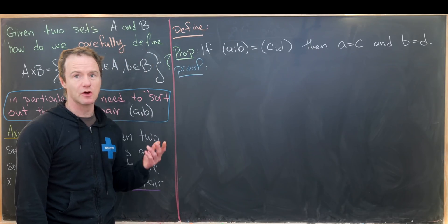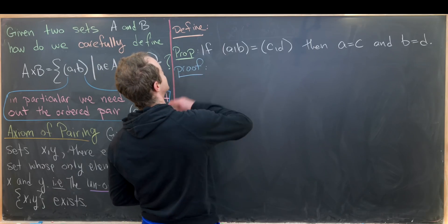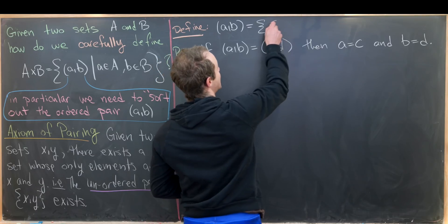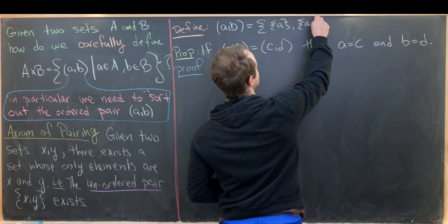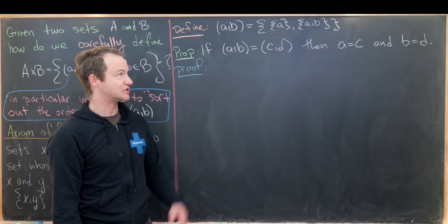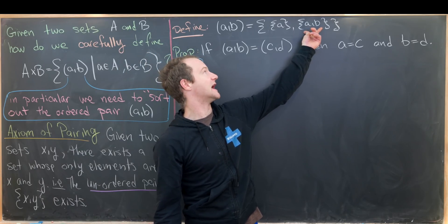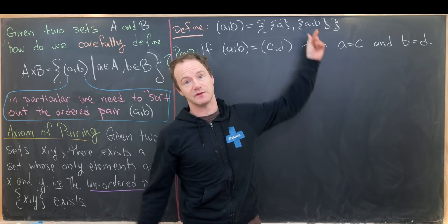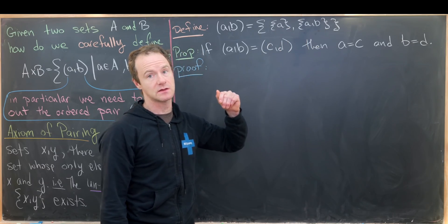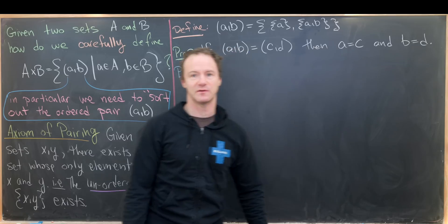Now we want to use the axiom of pairing in order to define an ordered pair. There are several ways to do this; I'm going to go over the one that is most standard. We'll define the ordered pair (a, b) to be the set containing the set {a} and the set {a, b}. We are assured that this object exists: the unordered pair or doubleton {a, b} exists from the axiom of pairing, and then the set containing {a} and {a, b} exists again from the axiom of pairing.